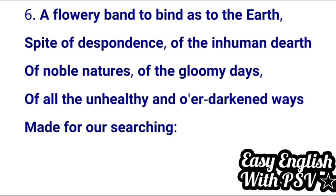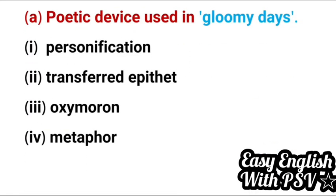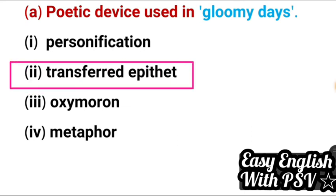Now the last extract. Do tell me your score in the comment section after attempting all 24 questions. Extract: 'A flowery band to bind us to the earth, despite of despondence, of the inhuman dearth of noble natures, of the gloomy days, of all the unhealthy and over-darkened ways made for our searching.' Poetic device in 'gloomy days': it is transferred epithet — gloom, a human feeling, has been transferred to 'days', a non-living thing. That is why it is transferred epithet, not personification.